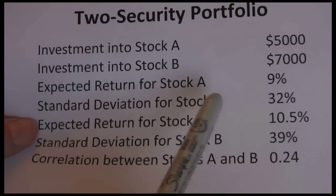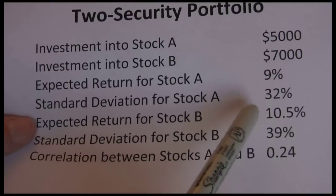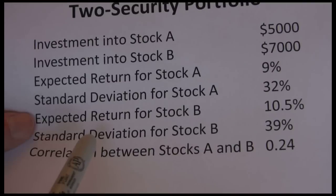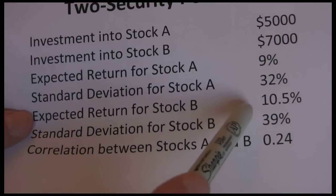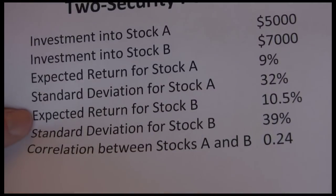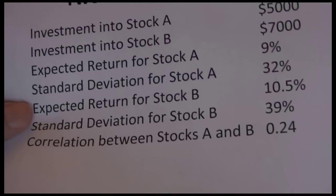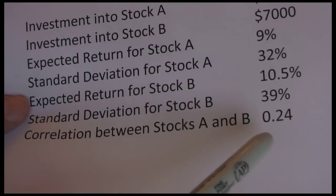We have an expected return for stock A of 9%, standard deviation for stock A of 32%. Stock B is a little bit riskier, has a 39% standard deviation. In addition to that little bit higher risk, we get a little bit higher return with a 10.5% expected return. Correlation between stocks A and B is 0.24.